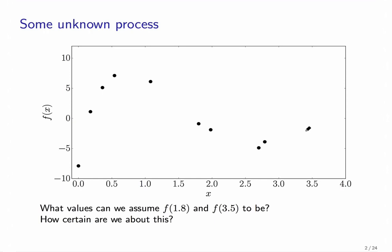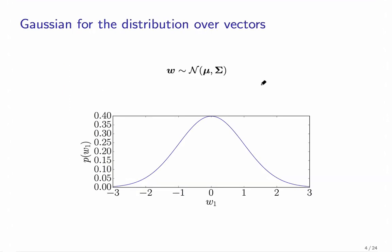So in order to get such a measure of uncertainty, we model our regression function in a probabilistic way. And we do this by defining a distribution over functions. But let's first look back on distributions over vectors.